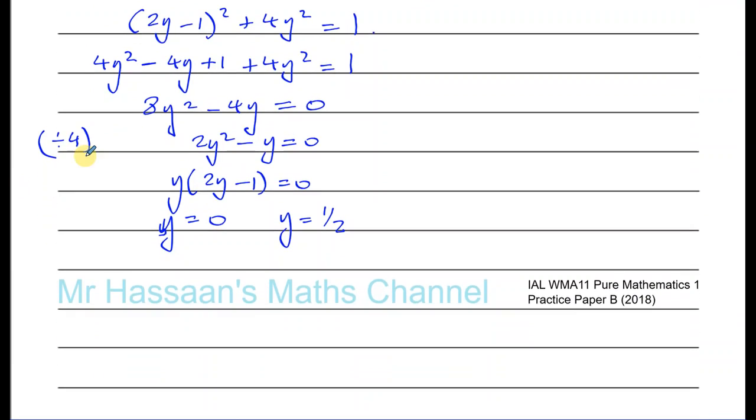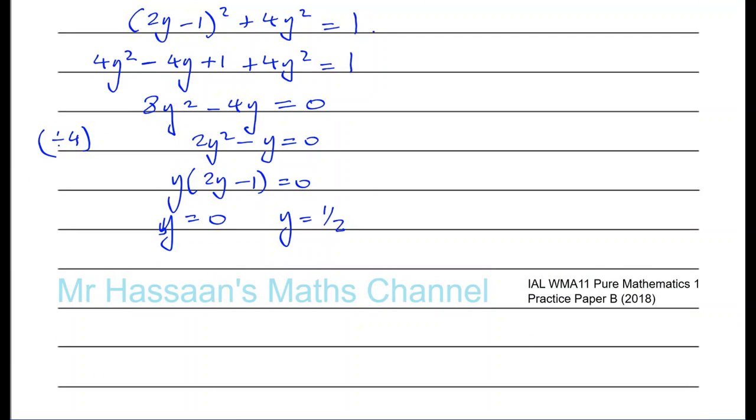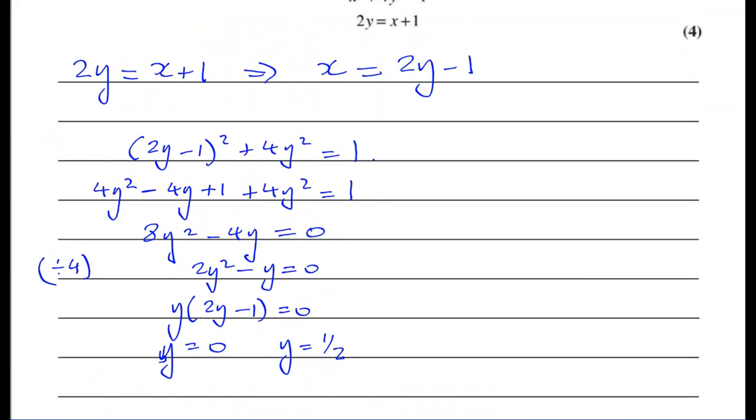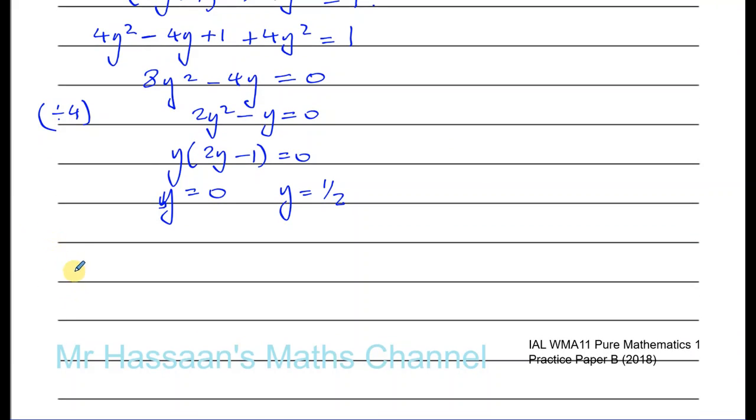Now I've got to find the values of x, which you can do pretty simply, because you have here, already written out, x is 2y minus 1. We know that x is equal to 2y minus 1. We found, we rearranged already for that. So now all we do is when y is equal to 0, then x is equal to 2 times 0 minus 1, which is minus 1. So you can say that that's like minus 1, 0 is one solution.